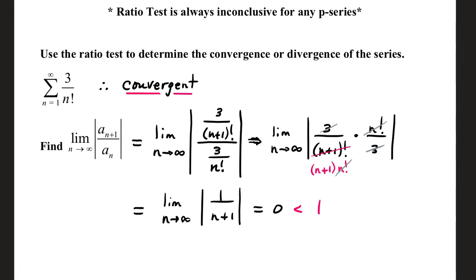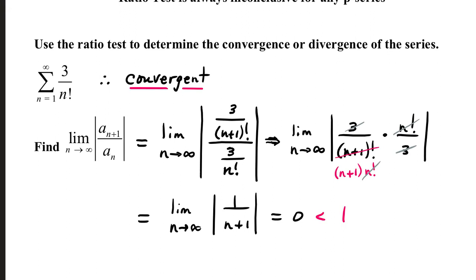Use the ratio test to determine the convergence or divergence of the series. We have the infinite series from one to infinity, three over n factorial. We're going to build our limit, a sub n plus one, replace n with n plus one, so that's three over n plus one factorial. The denominator will be the original a sub n term, three over n factorial.